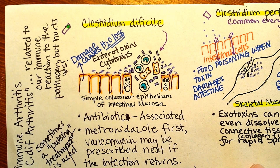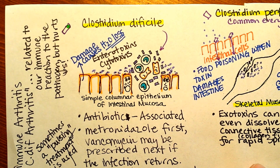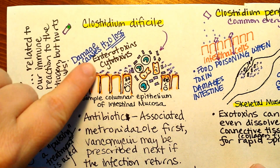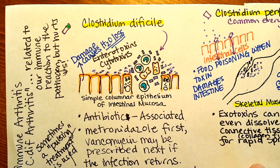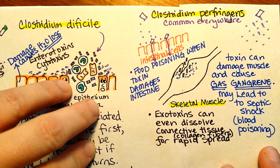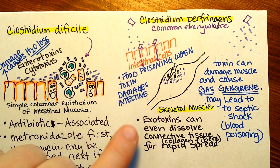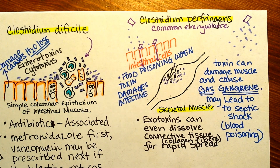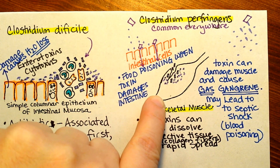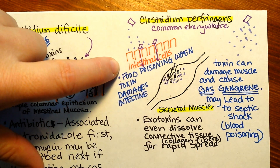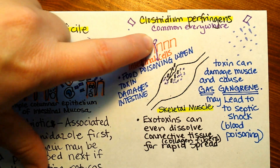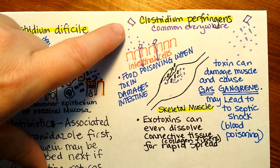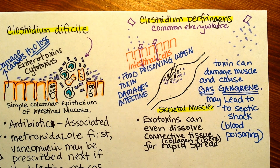With C. diff, the endospores can be introduced from a hospital bed, or from the hands of a patient or healthcare worker, and then the endospores can start the massive damage we see with C. diff. Clostridium perfringens is well known for causing gas gangrene when the bacteria or its toxins reach the skeletal muscle, and for causing food poisoning when endospores germinate in the intestine and toxins are released.